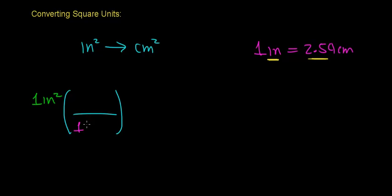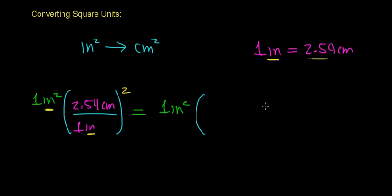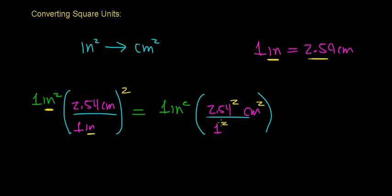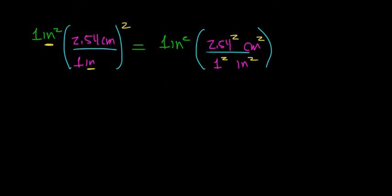Notice that this inch squared would not cancel out with just one unit of an inch — we need to square the entire conversion factor. So we're going to square the entire conversion factor, squaring all the terms in the numerator and all the terms in the denominator. This works out to be 2.54 squared times centimeters squared, divided by 1 squared. To demonstrate that we must square every single term, I'm squaring each term, including inches squared.